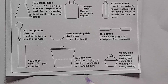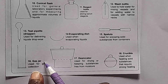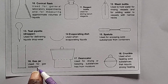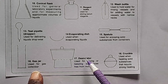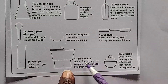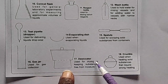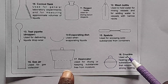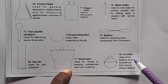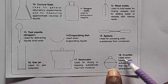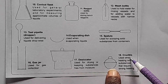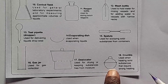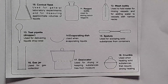Number fifteen, we have a spatula. A spatula is used for scooping solid substances from containers. Then, number sixteen, we have a gas jar. A gas jar is used for collecting gases, or used for gas collection. Here, we have a desiccator. A desiccator is used for drying or keeping substances free from moisture. Then, number eighteen, we have a crucible. A crucible is used when heating solid substances that require strong heating.